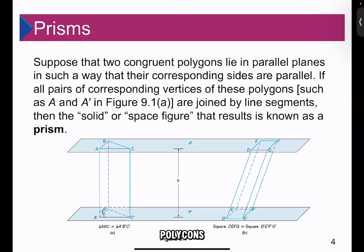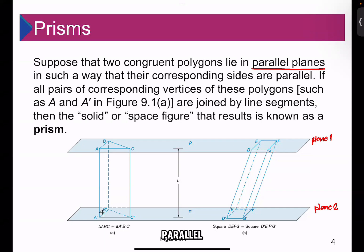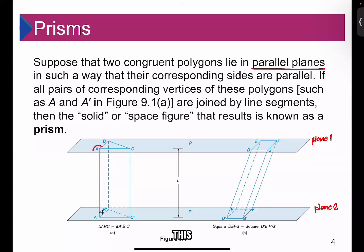Suppose that two congruent polygons lie in parallel planes — let's call them plane 1 and plane 2 — in such a way that their corresponding sides are parallel. If all pairs of corresponding vertices of these polygons, such as A and A' in figure 9.1a, are joined by line segments, then the solid that results is known as a prism.